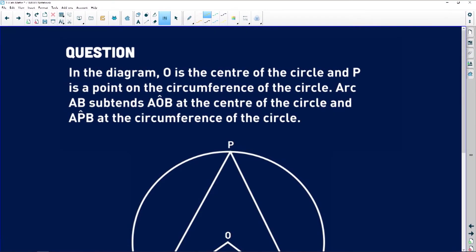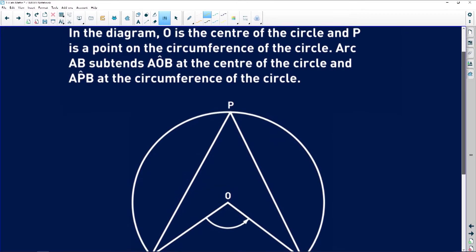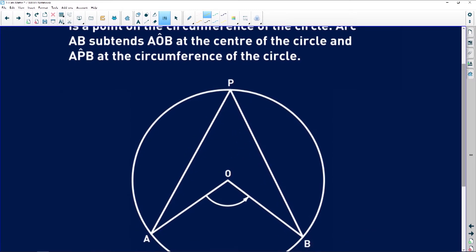So let's take a look. It says in the diagram, O is the center of the circle and P is a point on the circumference of the circle. O is the center. Very important. The center dictates a lot of things in your circle.